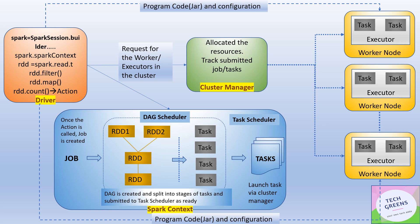These tasks are then launched on the different executors in the worker nodes through the cluster manager. The entire resource allocation and tracking of jobs and tasks is performed by the cluster manager. One important point: as soon as you do a spark-submit, your user program JAR and other configurations are copied onto all available nodes in the cluster, so the program becomes local on all worker nodes. This means parallel executors running on different worker nodes do not have to do any network routing, thus saving network overhead.